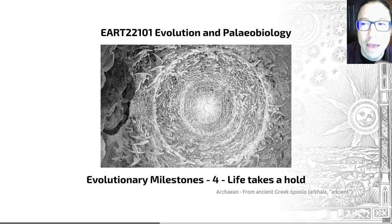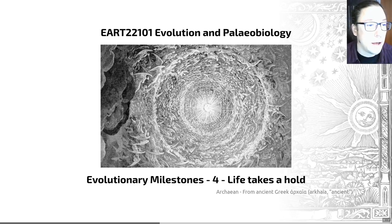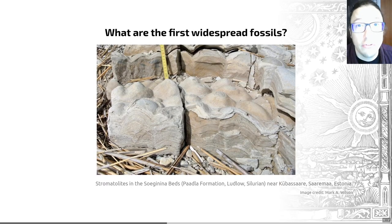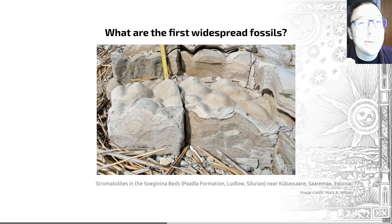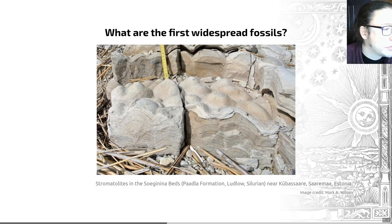So we have this Archean Aeon where everything we've been looking at so far occurred. But we're moving on to the next major period in life history. Shortly after what I presented earlier as potentially being the first fossils, things called stromatolites start appearing. These are structures associated with bacterial mats, and an example from Estonia is shown in this image here.